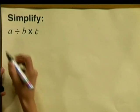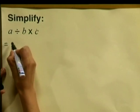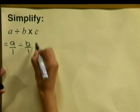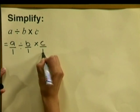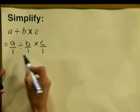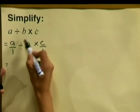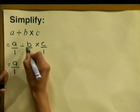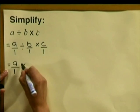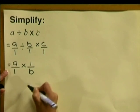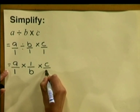Now because we're dealing with our flipping over and multiplying rule, let's create fractions. So it's A divided by 1, divided by B divided by 1, multiplied by C divided by 1. Now we're starting with our divide — remember we're going to flip over and multiply, and it's always the fraction directly after the divide sign. So we write A divided by 1, then instead of divide we write a multiplication sign, and we flip it over so it becomes 1 divided by B, multiplied by C divided by 1.